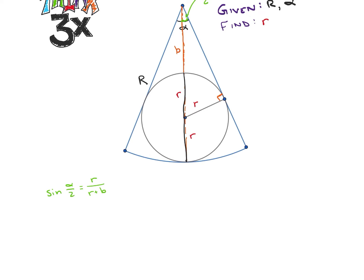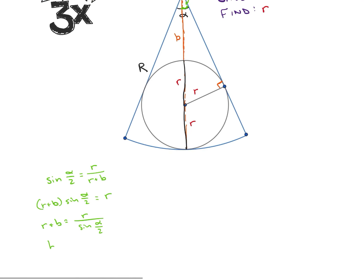What I'd like to have is I'd like to eliminate this b. So let's solve this and we'll get r plus b times sine of alpha over 2 is equal to r, r plus b is equal to r over sine of alpha over 2, so that b is equal to r over sine of alpha over 2 minus r. So now I have b equal to this expression here. So this is going to be a useful expression that we're going to come back to in a minute.